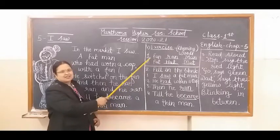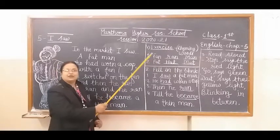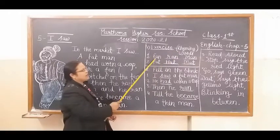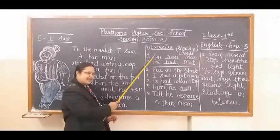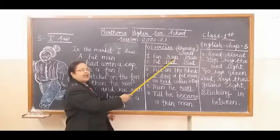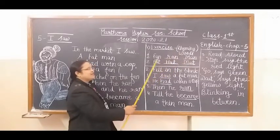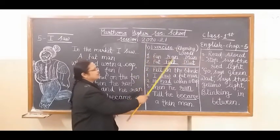So we will talk about some rhyming words here. Number one is fan. Can you tell me two rhyming words of this word? Yes. Number one is fan, F-A-N fan, R-A-N ran, M-A-N man. So we will say it together. We will recite it together. Fan, ran, man.